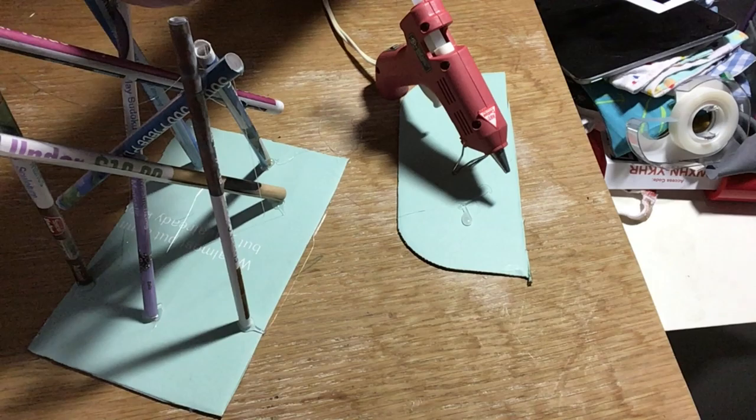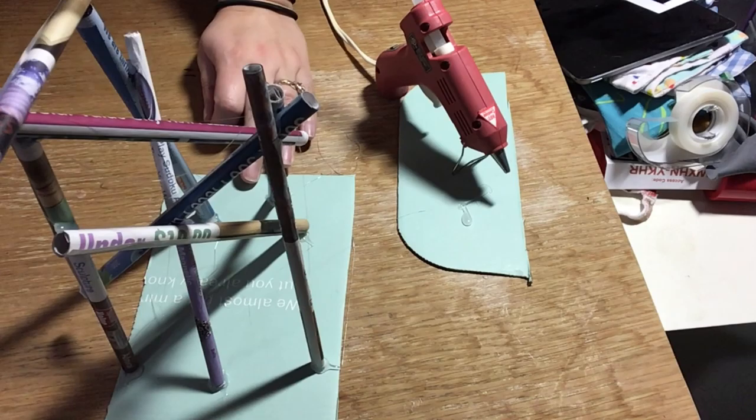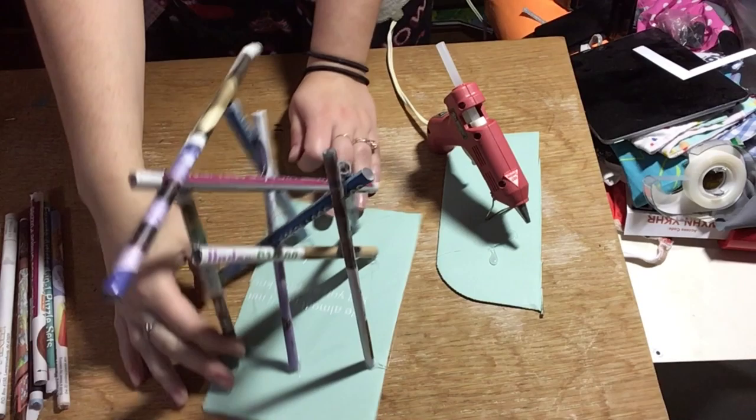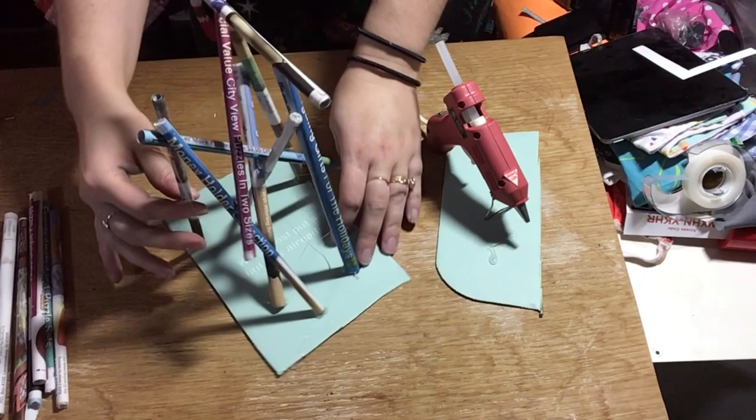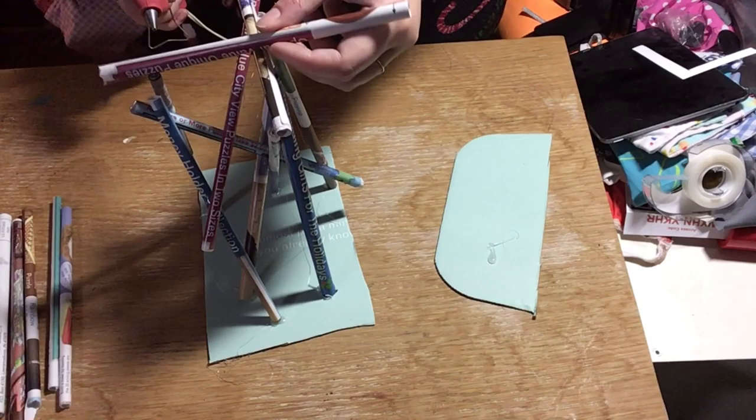Make sure that you're not getting kind of trapped into using a tube to kind of brace two other tubes though, because then all of your sculptures will end up kind of looking the same. So you can see that I have braced a tube across two tubes and I'm thinking about maybe doing it again.